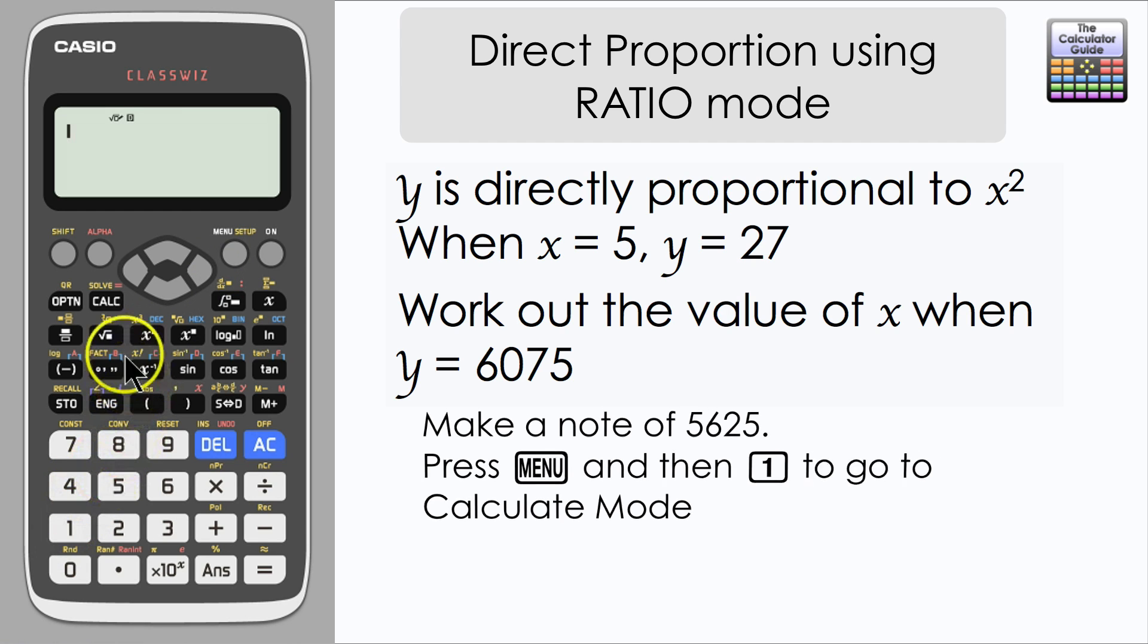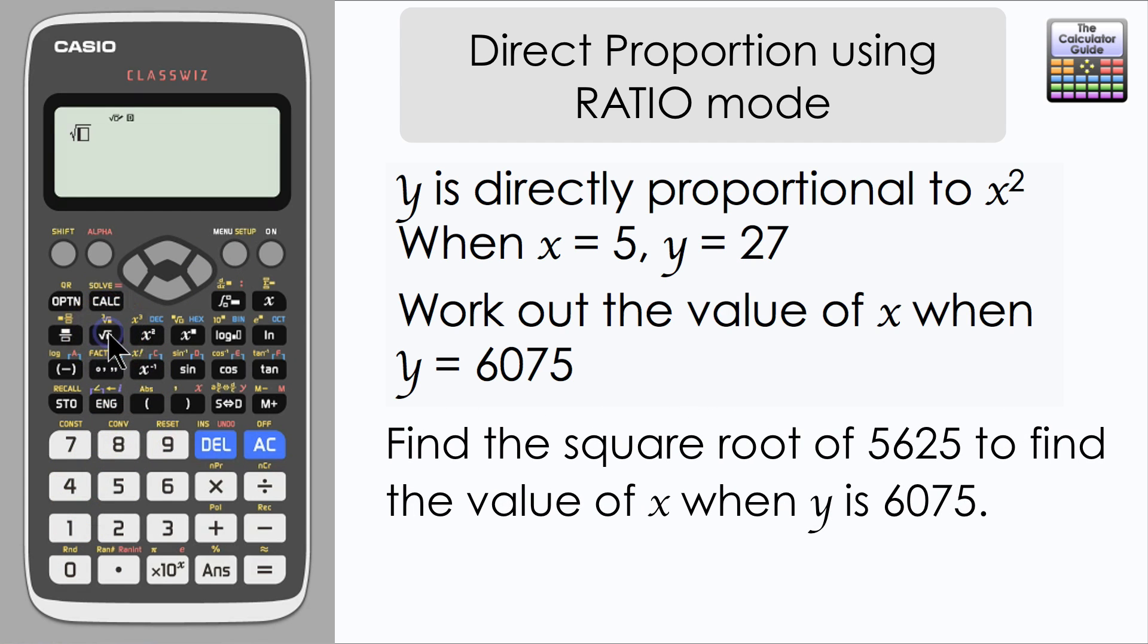Now in order to find out what my value of x is, I need to take the square root of the answer that was given to me in ratio mode. So the square root of 5625, and here's our answer, 75. So the value of x when y is 6075 is 75.